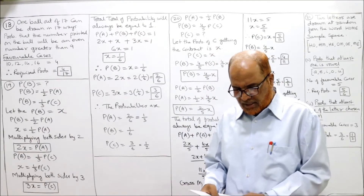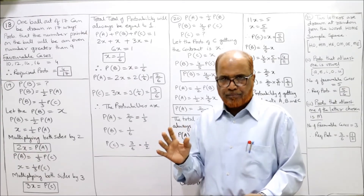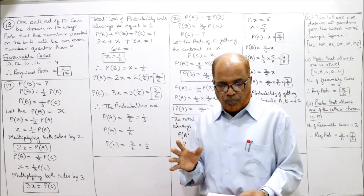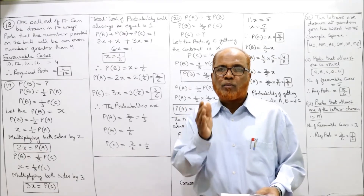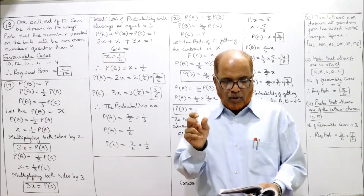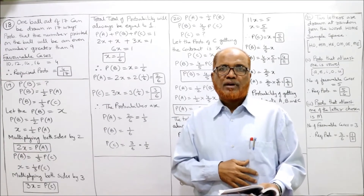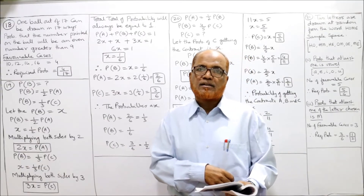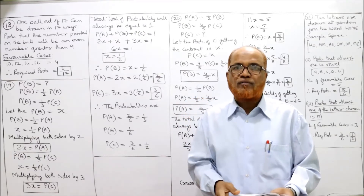Next, problem 19. If A, B, and C are mutually exclusive and exhaustive events, find P of B. We have to find the probability of B, given that one-third of P(C) equals half of P(A) equals P(B). In other words, P(B) equals half of P(A) and one-third of P(C).